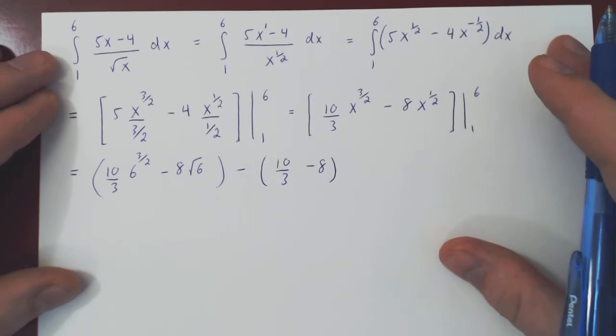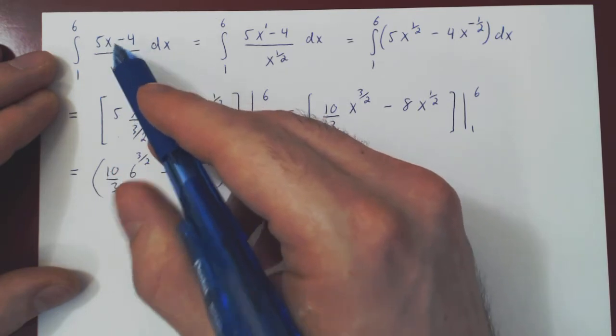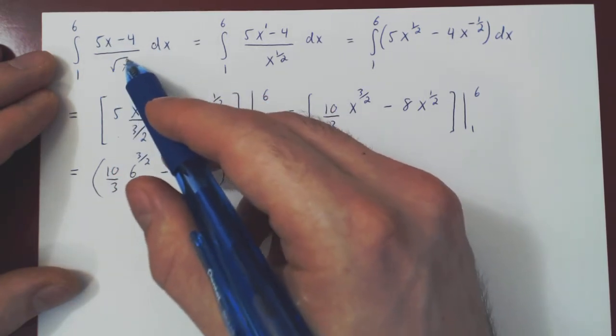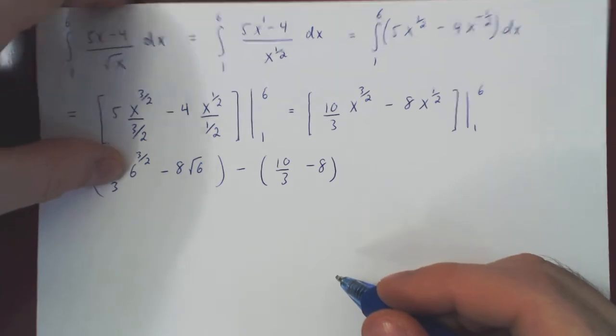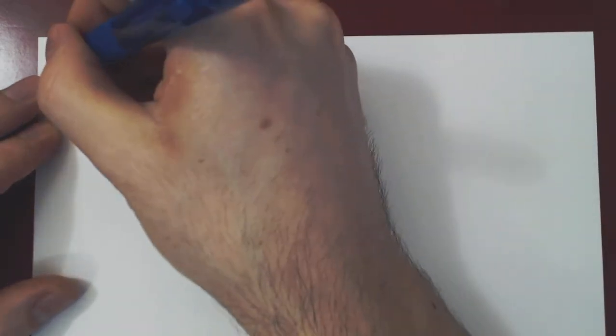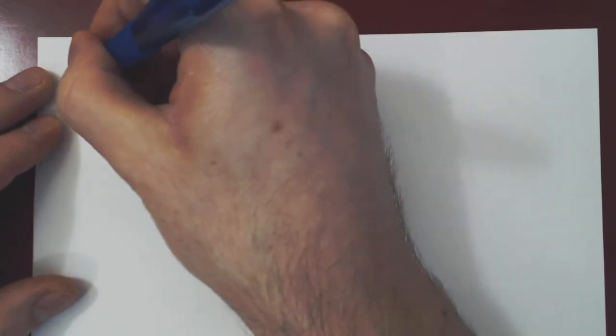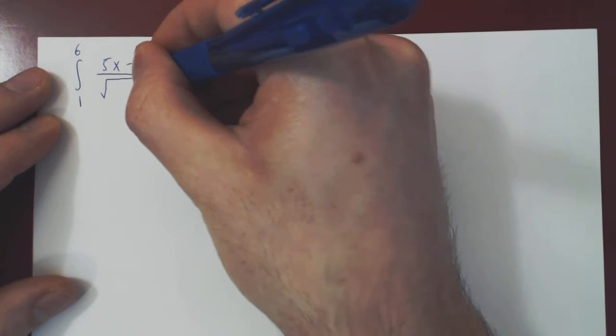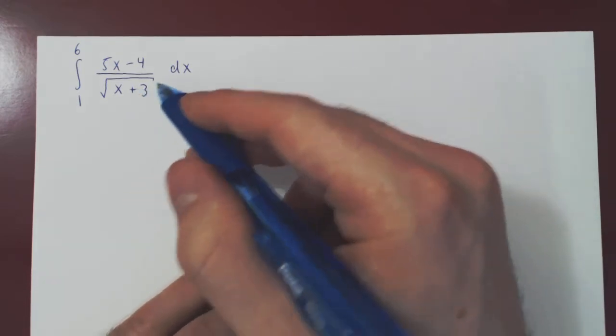Now let's tweak our integral a little bit. What if we replace, so we keep everything else the same, 1 to 6, 5x minus 4 dx, but we replace now root of x by root of x plus 3. Will this make a difference? And if so, will it be interesting? So we want to integrate from 1 to 6, 5x minus 4 over the square root of the sum of 2 terms, not just x, but x plus 3 dx. Is this more interesting? And if so, why?